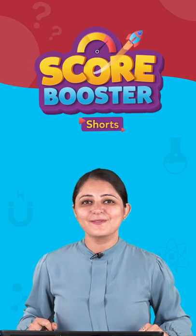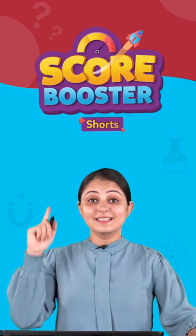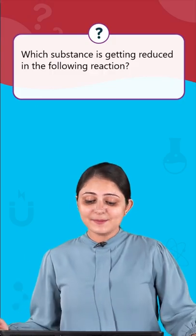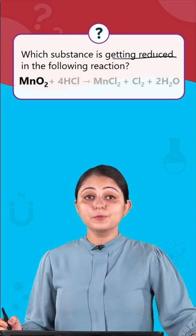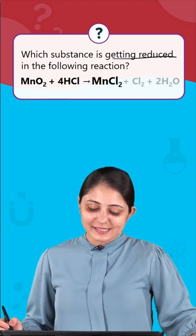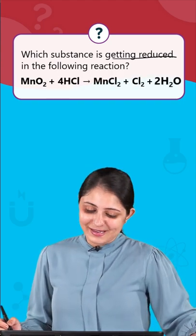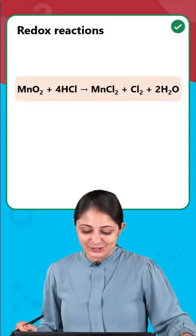Hey everyone, we are back with another score booster question. This time the question is which substance is getting reduced in the following reaction: MnO2 + 4HCl → MnCl2 + Cl2 + 2H2O. Clearly this is a redox reaction.